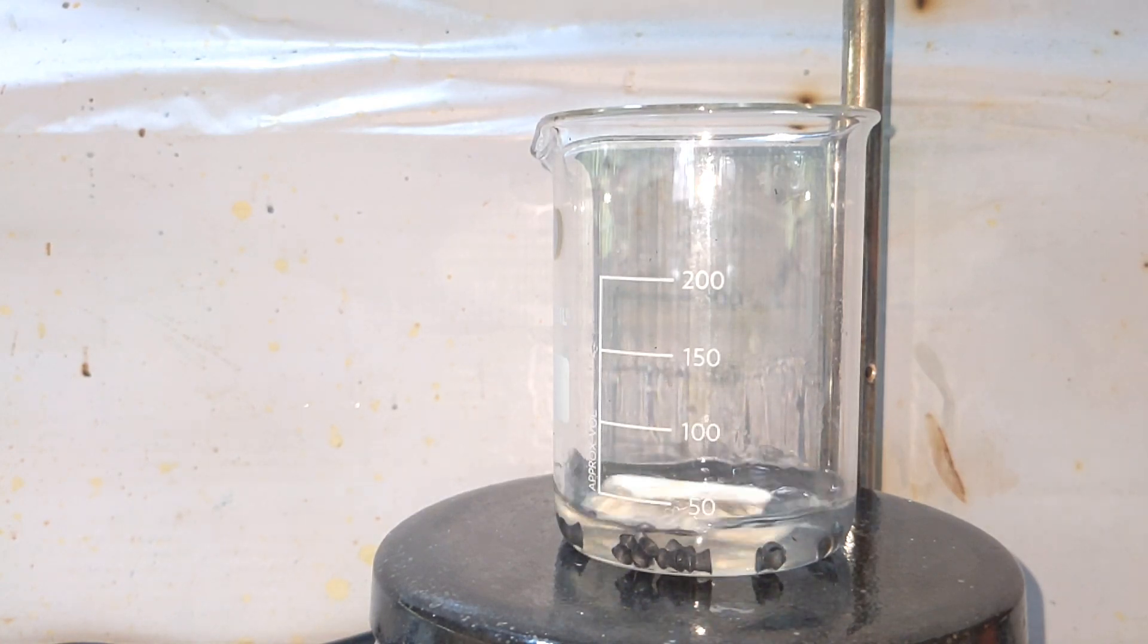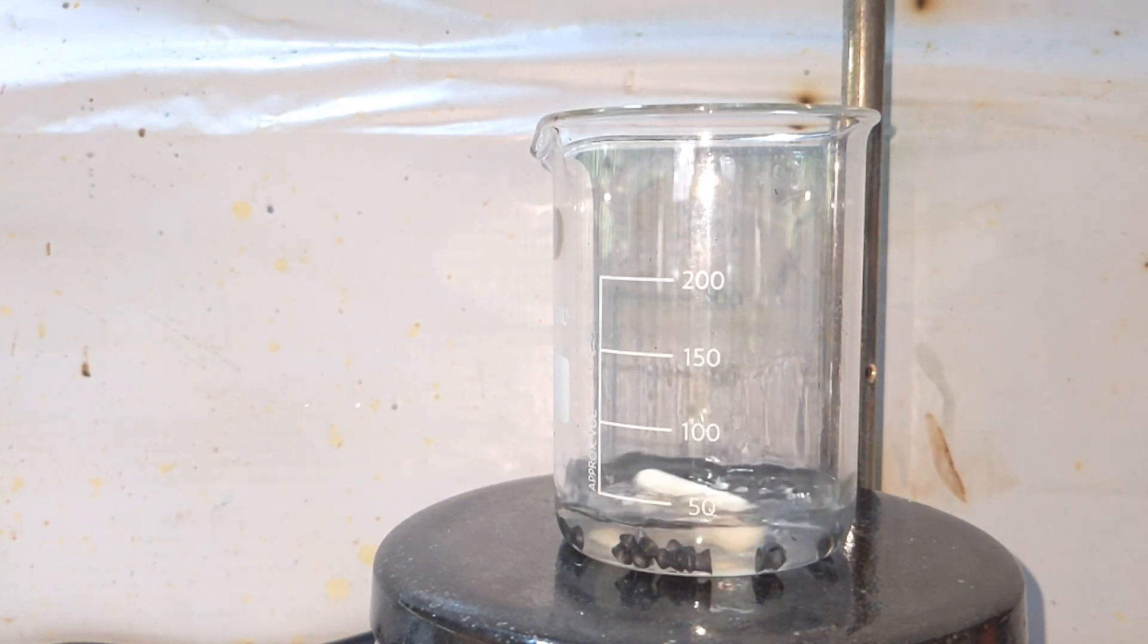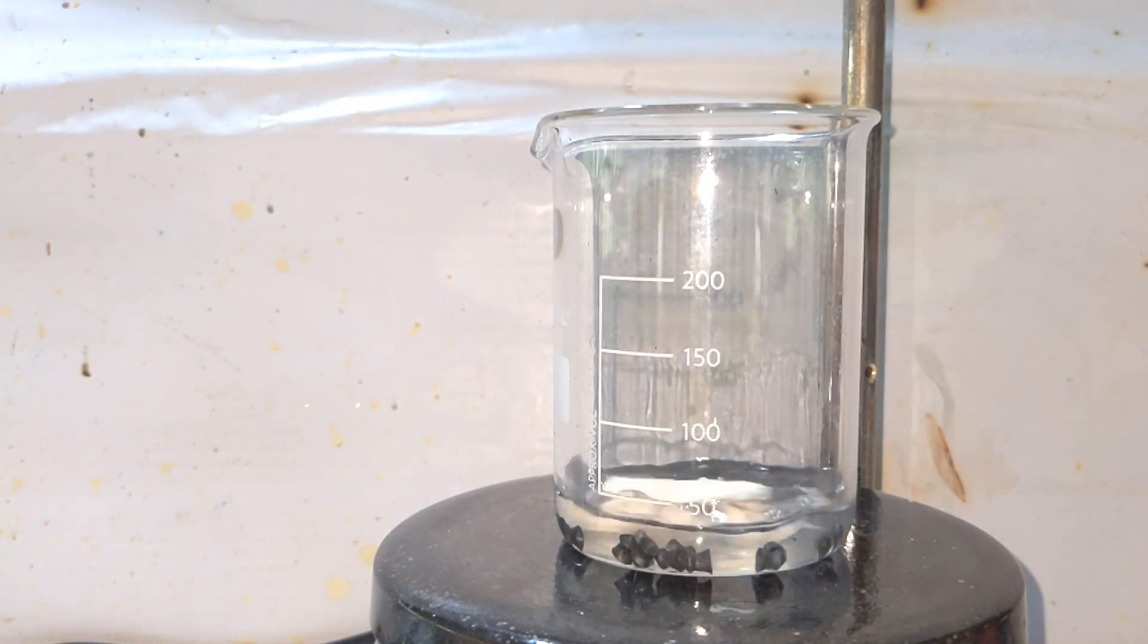On adding, you immediately see an oxide layer on the lead metal. This is actually preventing the reaction from happening.